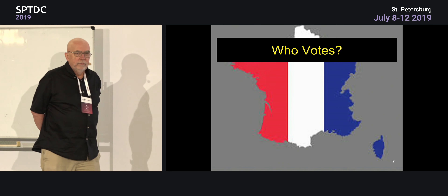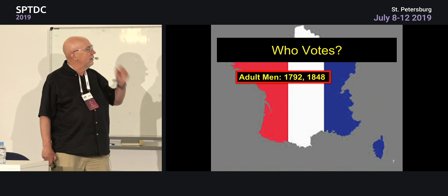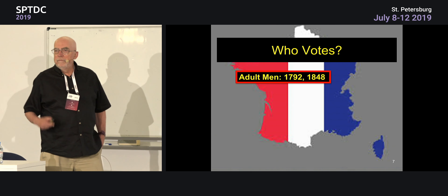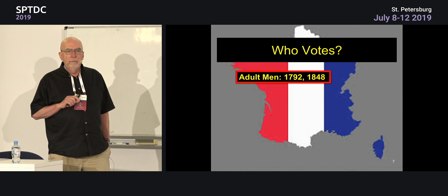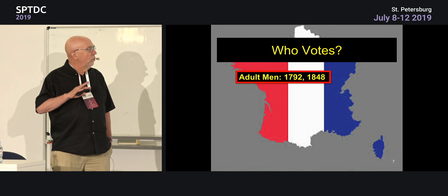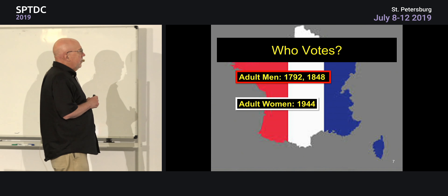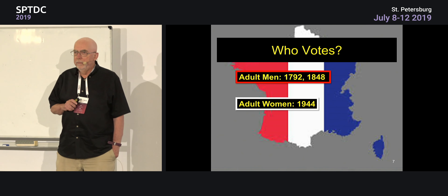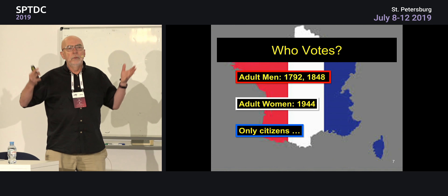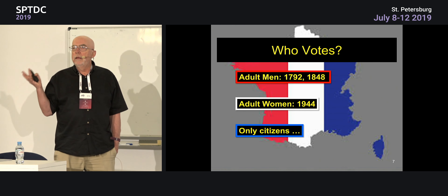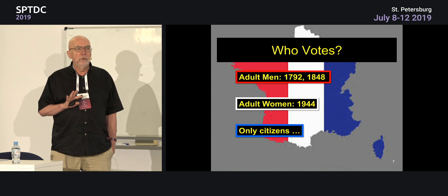Typically, we want something where a lot of ostensibly independent agents are making the decisions. The question is who gets to vote — this determines the security of the system. In France, for example, adult men were given the right to vote in 1792, then again in 1848. Women got the vote in 1944, and only citizens are allowed to vote. These rules determine who gets to vote, which determines the security and structure of your system — specifically, who gets to vote on the state of the ledger.